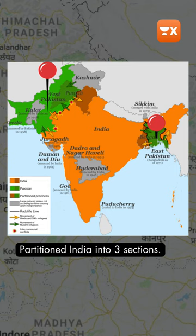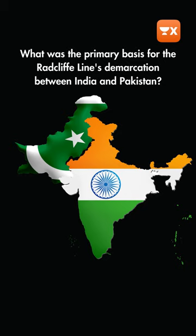What was the primary basis for the Radcliffe Line's demarcation between India and Pakistan?